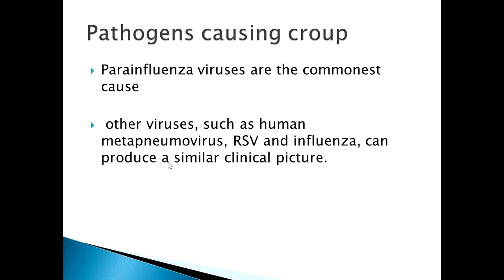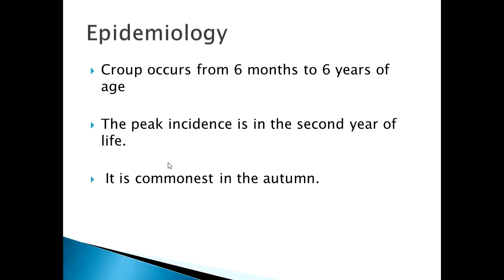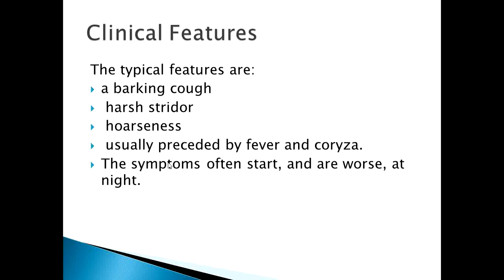Viral croup accounts for over 95% of laryngotracheal infections. The most notorious organism is parainfluenza virus, but other viruses such as human metapneumovirus, respiratory syncytial virus, and influenza can produce a similar clinical picture. Croup occurs from six months to six years of age; the peak incidence is in the second year of life, and it is most common in autumn.